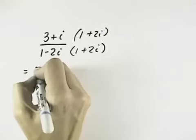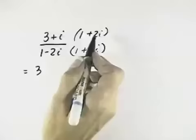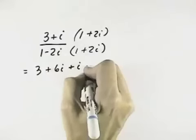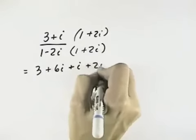So when we multiply out the numerator, we've got 3 times 1 is 3, 3 times 2i is 6i, 1 times i is i, and i times 2i is plus 2i squared.